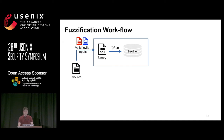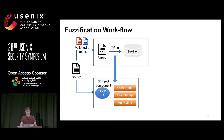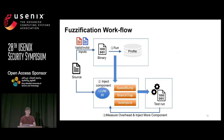Now let's put it all together in the workflow. Given source code, we feed many valid and invalid samples to the binary and collect a profile. After collecting all information, we inject the three components using the profiled information and measure overhead. If the overhead satisfies the user-specified budget, we inject more components. If there is no space to inject more, we release the fortified binary to the user.